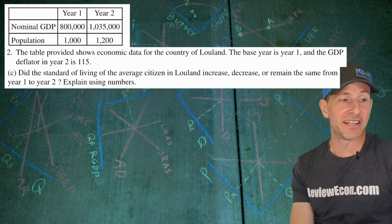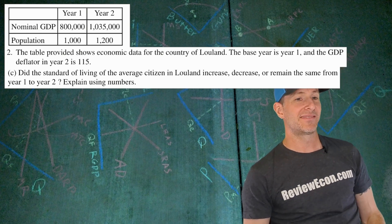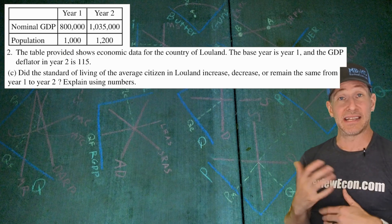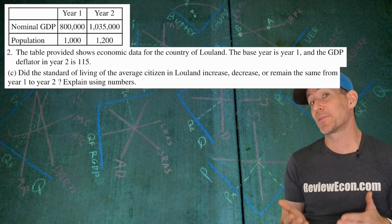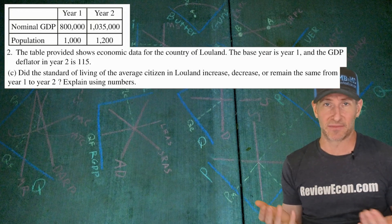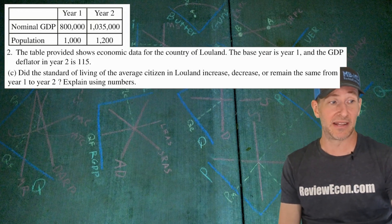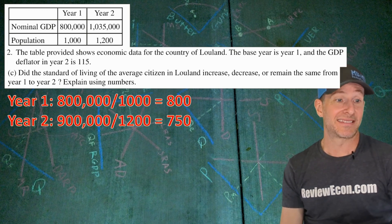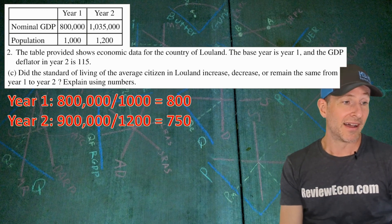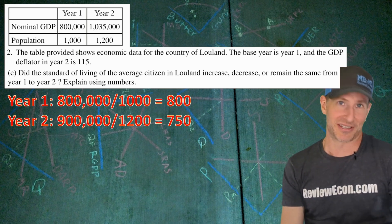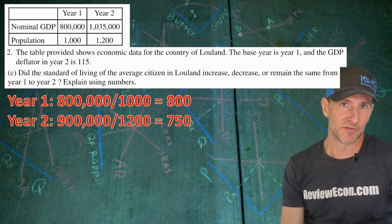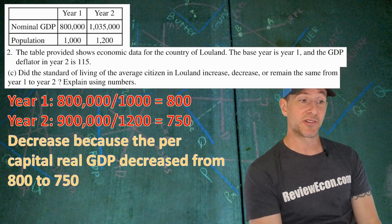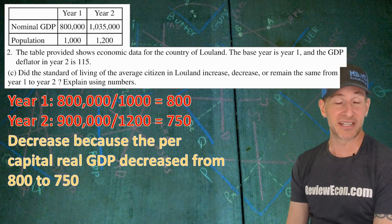On to part C. Did the standard of living of average citizens in Luland increase, decrease, or remain the same from year one to year two? Explain using numbers. This is the first time I can recall where we needed to calculate per capita real GDP, because per capita real GDP is really the main measure of standard of living. You take real GDP divided by population to get per capita GDP. In year one, per capita GDP is 800, and in year two it is 750. Year one uses real GDP because real and nominal are the same for the base year. The answer is decrease — the standard of living decreased because per capita real GDP decreased from 800 to 750.